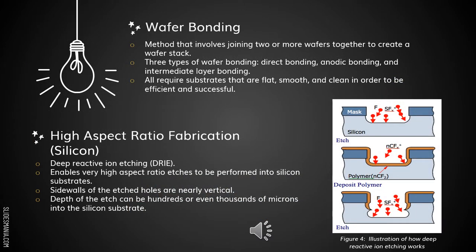The third fabrication method is wafer bonding — the method that involves joining two or more wafers together to create a wafer stack. There are three types of wafer bonding: direct bonding, anodic bonding, and intermediate layer bonding. All require substrates that are flat, smooth and clean in order to be efficient and successful.